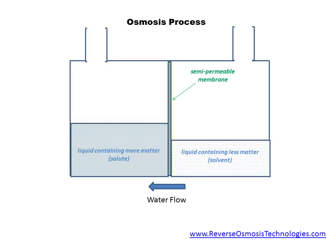Left to the forces of nature, liquid will tend to flow from the liquid containing a lower concentration of matter, the solvent, to the liquid containing a higher concentration of matter, the solute. Osmosis occurs when the solvent passes through a semi-permeable membrane to dilute the solute until both areas of liquid contain the same level or concentration of matter.